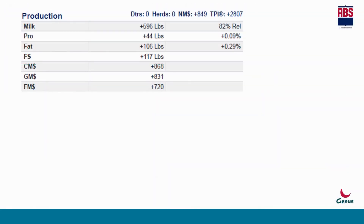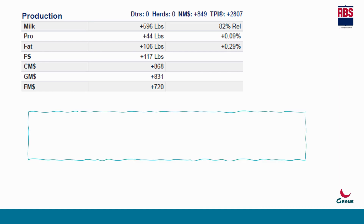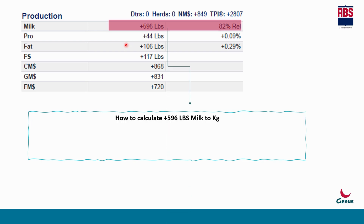Now let us understand how to calculate this LBS to kilogram. Friends, for all international presentations and ABS pedigree sheets, you will see milk in LBS, which is nothing but the pound. We need to convert this into kilogram, and there is a very simple formula that we are going to learn now.